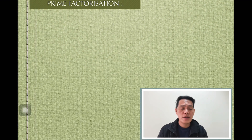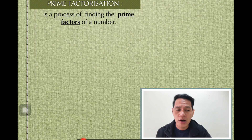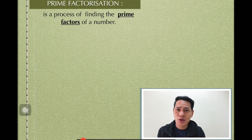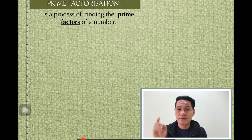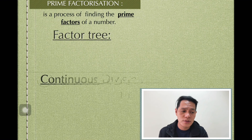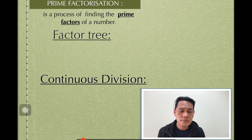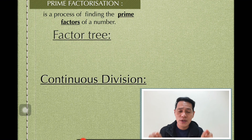Our next word is prime factorization. When we say prime factorization, this is a process of finding the prime factors of a number. I'm going to show you some of the steps: the first one is the factor tree method, and the other one is the continuous division. We need this prime factorization in order to find out the prime factors. Let's have an example.